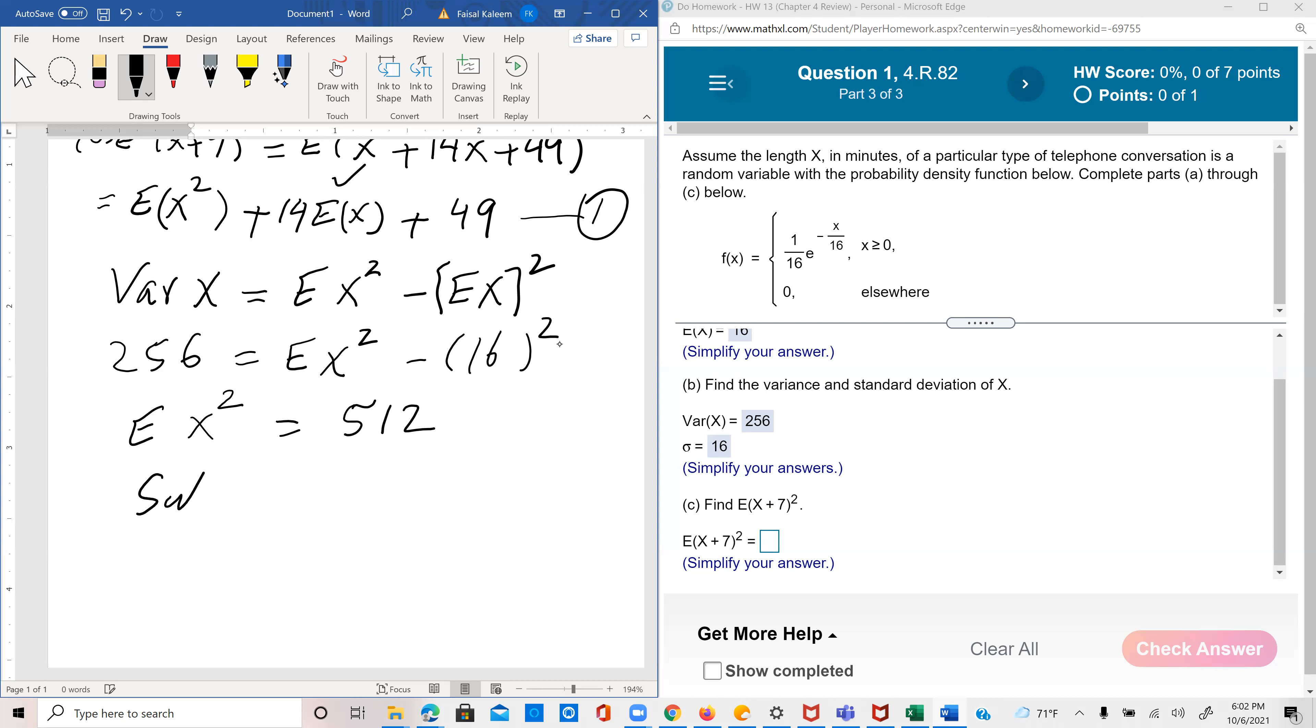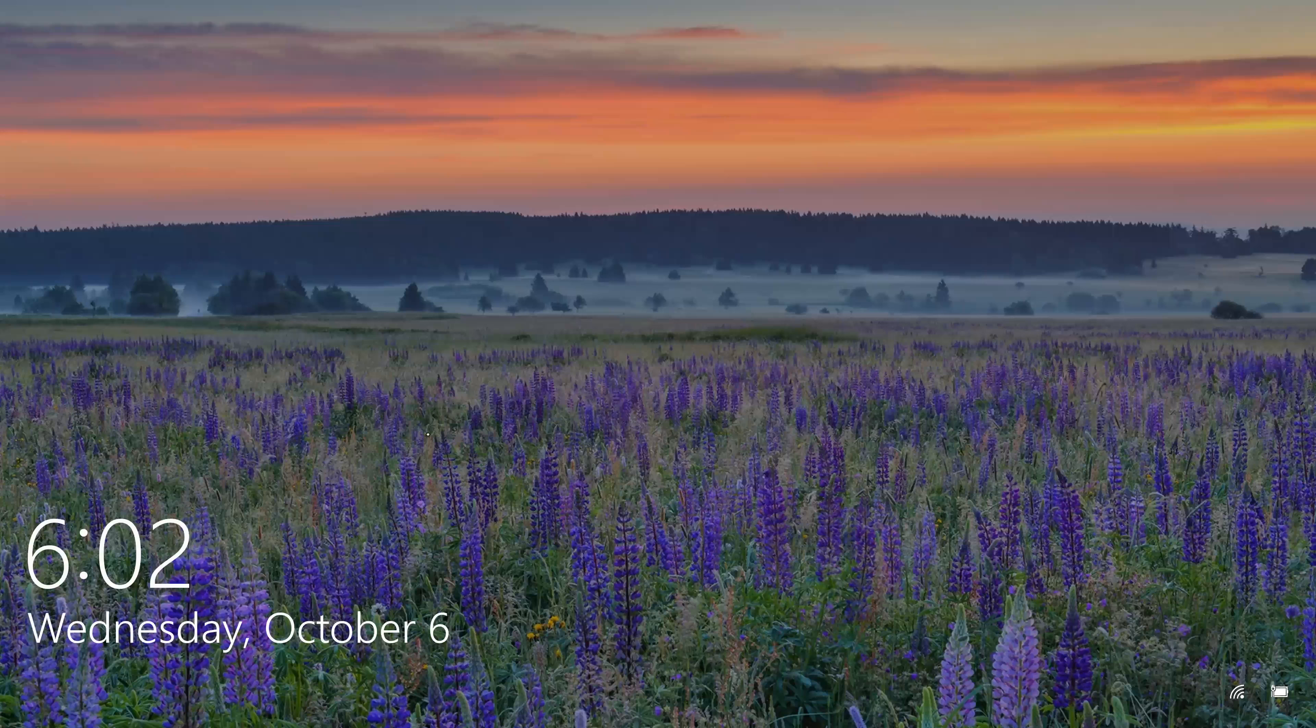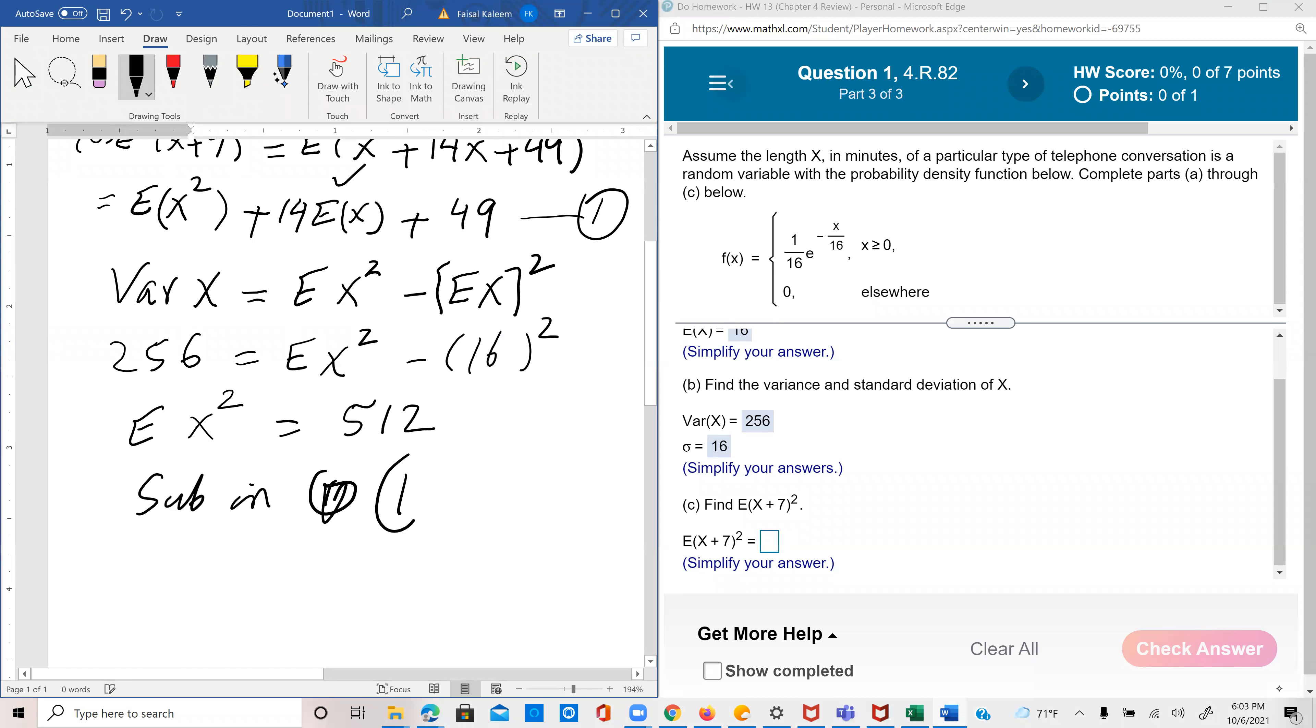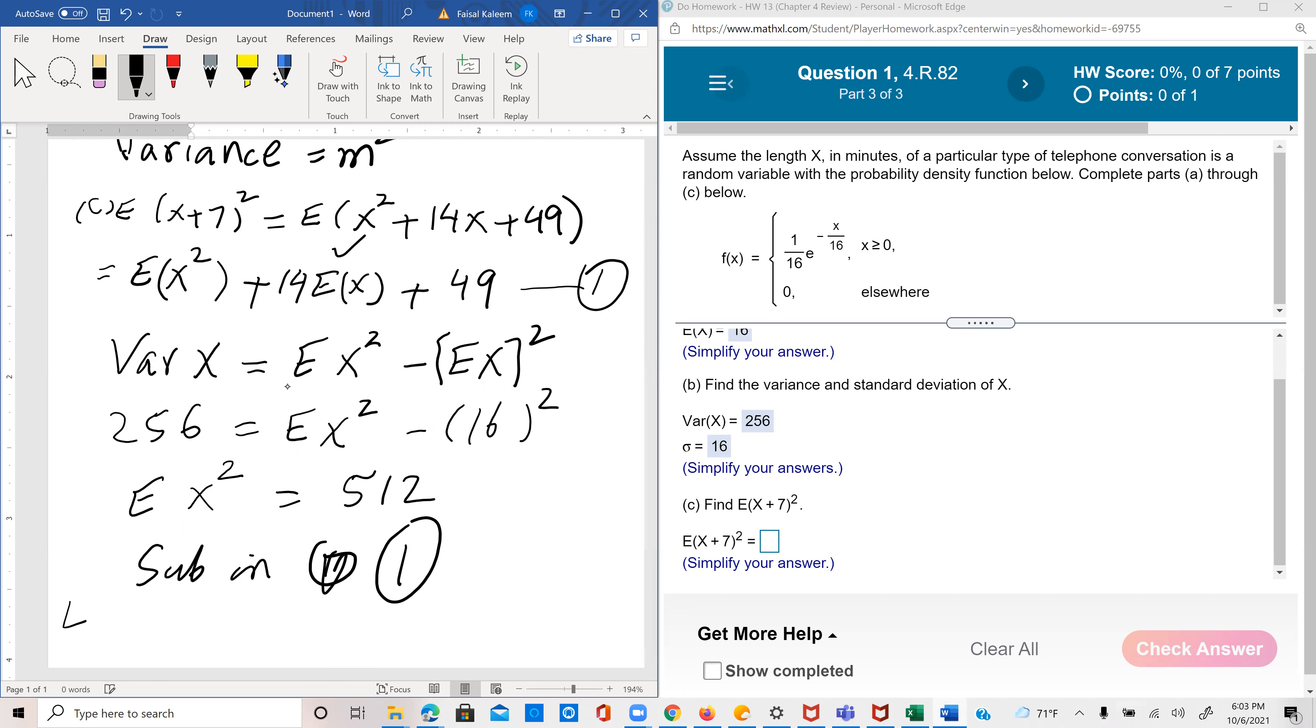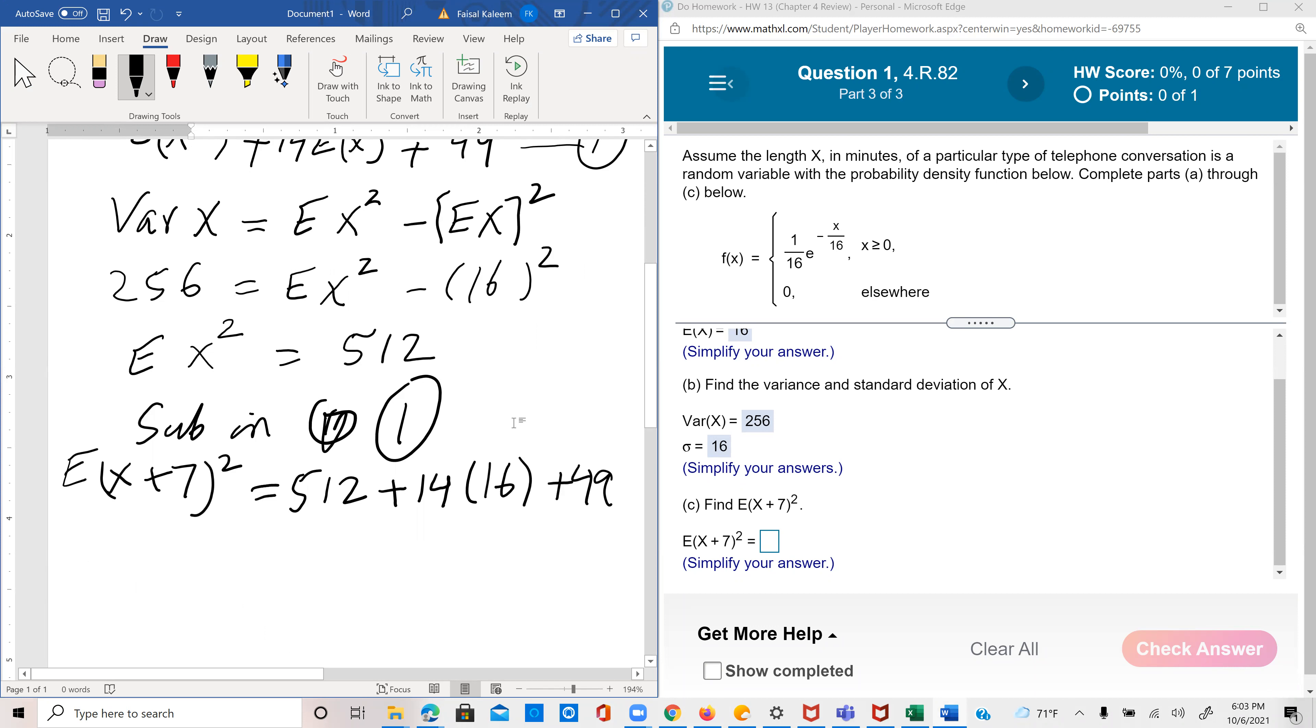And now substituting in equation one, we get the left side of it was E of x plus seven squared, and so equals E of x squared, which is 512, plus 14 times E of x, so 14 times 16, plus 49. So 16 times 14 is 224, plus 512 is 736, plus 49, so 785.